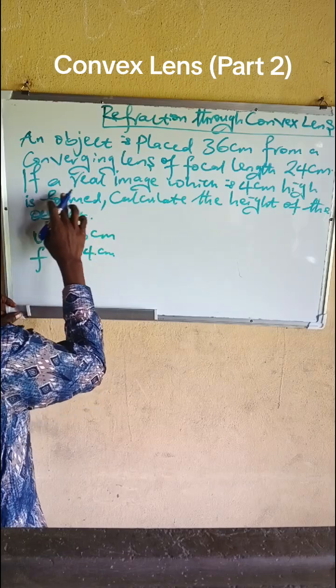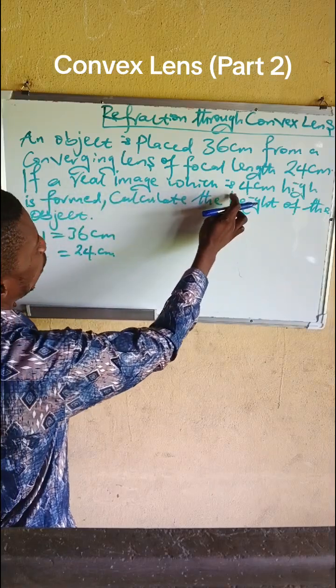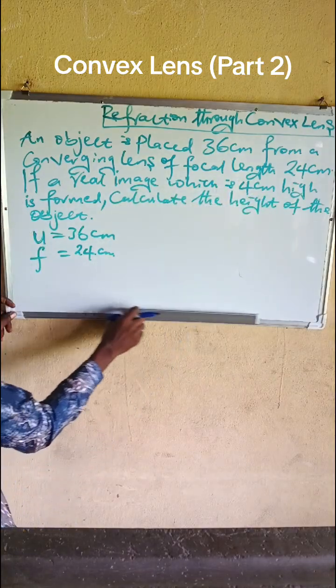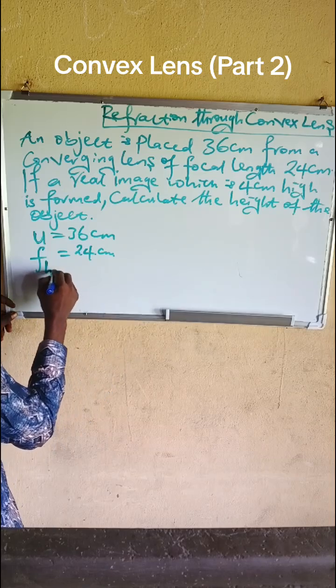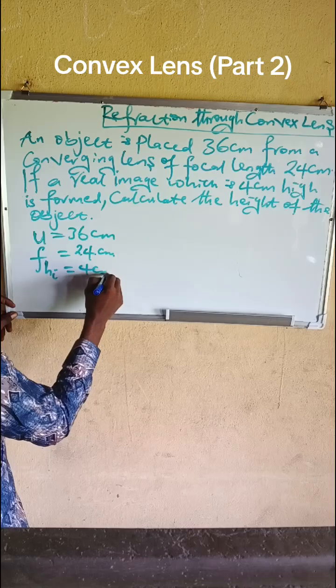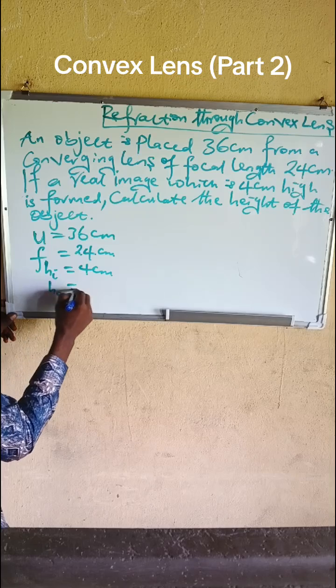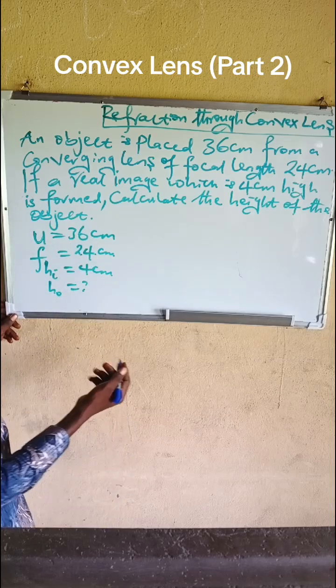The question says if a real image which is 4cm high is formed, that means image height is 4cm. Calculate the height of the object. Object height we don't know, so how do we solve this?